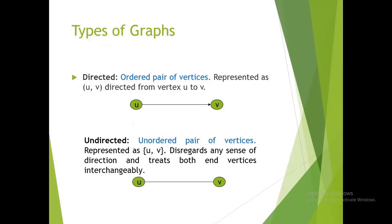Types of graph. Directed graph: ordered pair of vertices represented as (U, V) directed from vertex U to V.